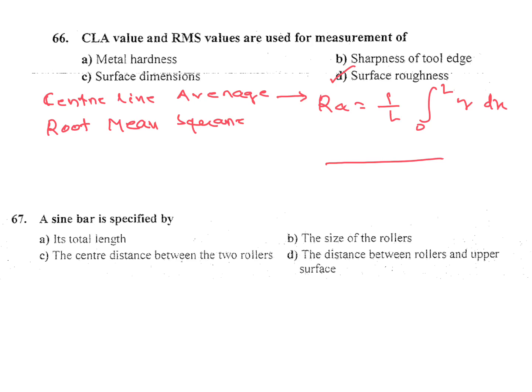If we are taking a sample of length L, here this one is Y1, here height is Y2, here Y3, here Y4. I will get RA is equal to Y1 plus Y2 plus Y3 plus Y4 divided by sample length.